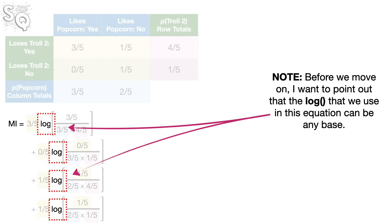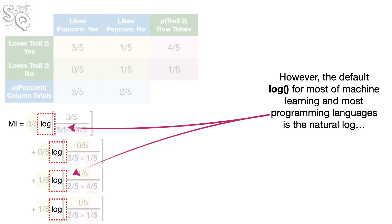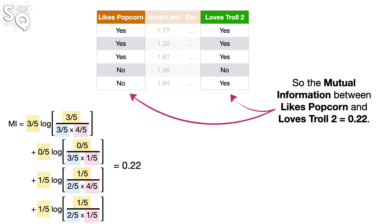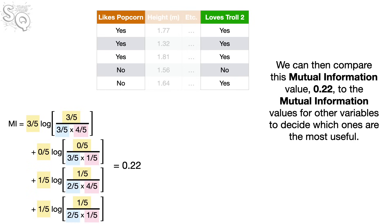The log function used in this equation can be any base; however, the default for most machine learning and most programming languages is the natural log, so that's what we use here. When we do the math, the whole thing equals 0.22. So the mutual information between likes popcorn and loves Troll 2 is 0.22. We can then compare this value to the mutual information values for other variables to decide which ones are the most useful.